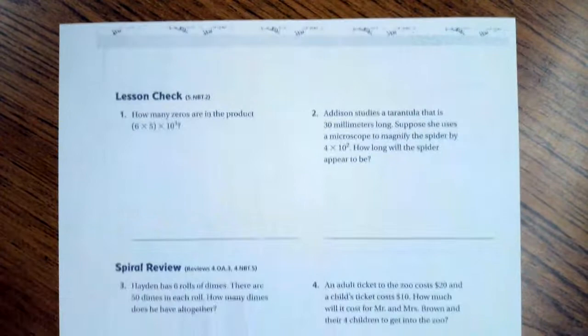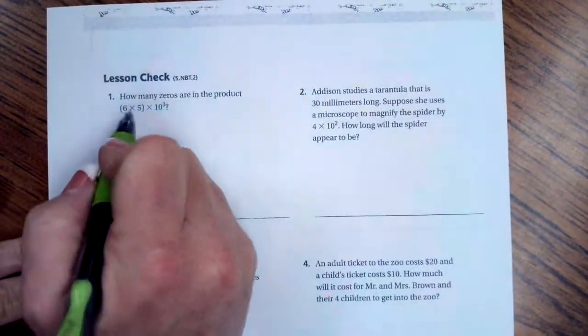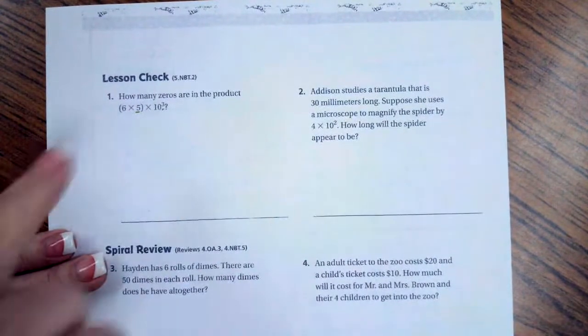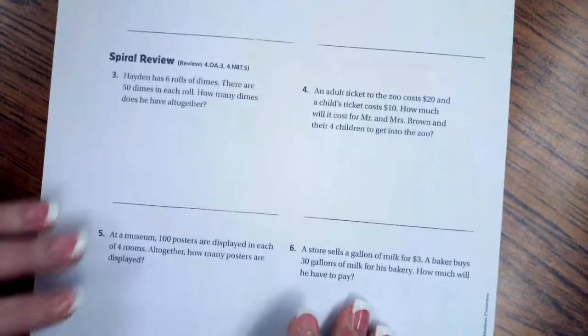We're going to go over onto the back, where you guys are going to do the lesson check, just like always. This is one of those ones where you've got to check that extra 0, because you still have to add 3 0's after you get this answer.